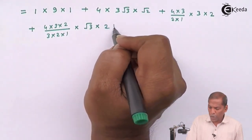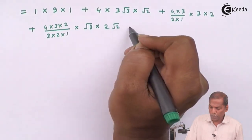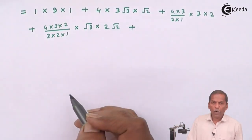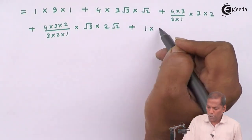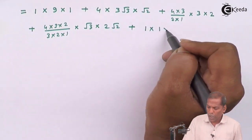Into now here root 3 raised 1 that is root 3 and root 2 cube so that uses 2 root 2.